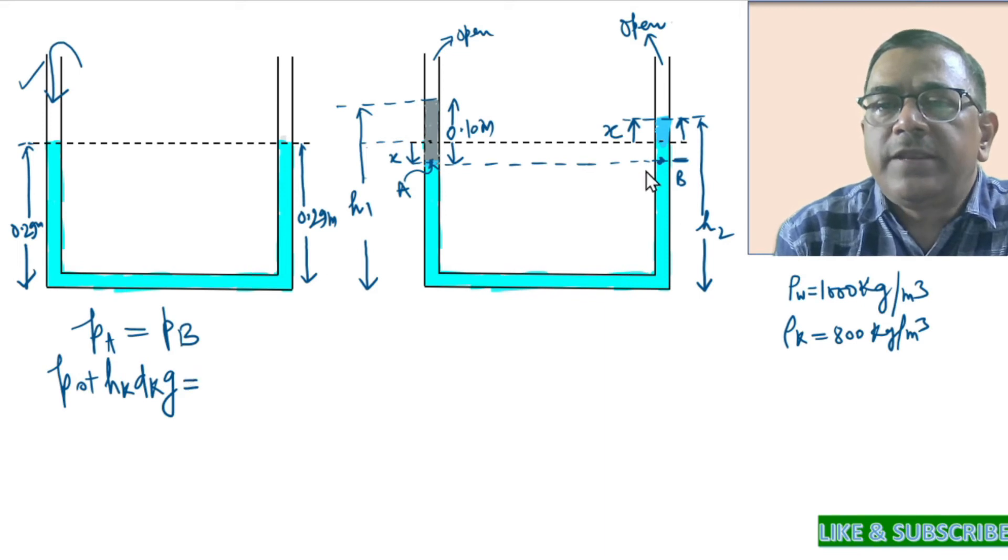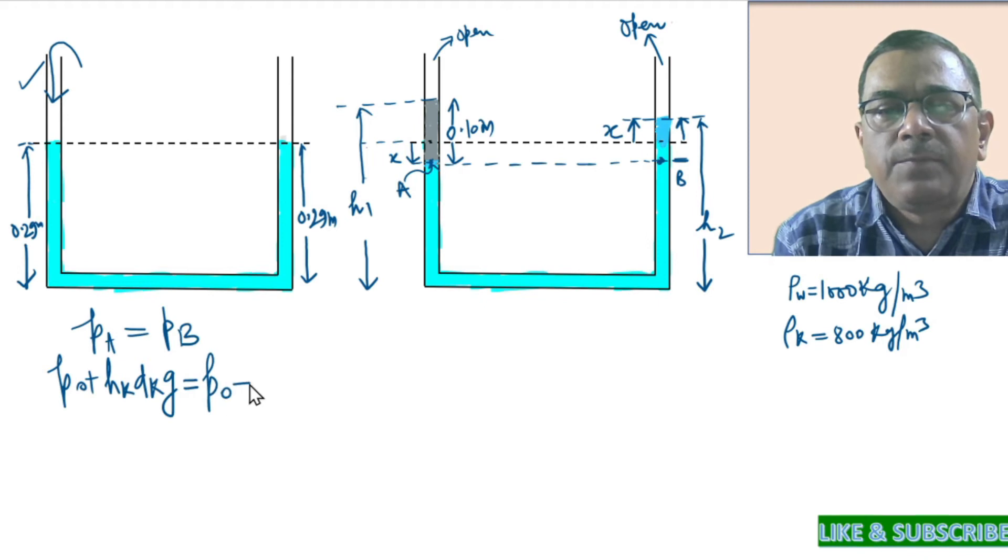On the other side, pressure at point B should equal P0 plus 2X times density of water times G.